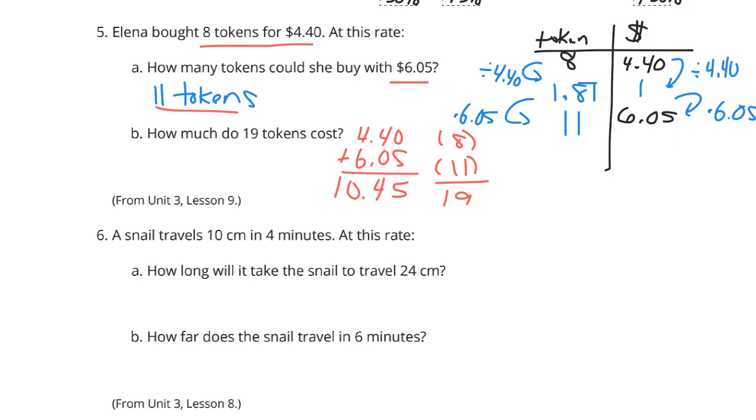Creative way of getting there. Now, if you didn't have that as an option, you could take your eight tokens for $4.40. You could have a target goal here of 19 tokens, which would mean you need to break this down now to one token. So you could divide the eight by eight.